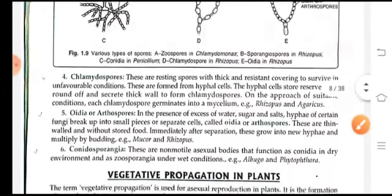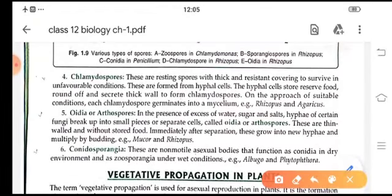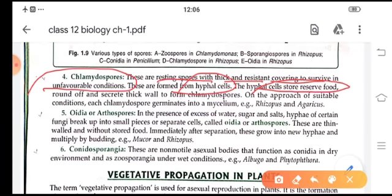Chlamydospores, what are these? These are resting spores with thick and resistant covering to survive in unfavorable conditions. They are formed from hyphal cells and these hyphal cells store reserve food. When the conditions get favorable, these chlamydospores, they germinate into new hyphae.